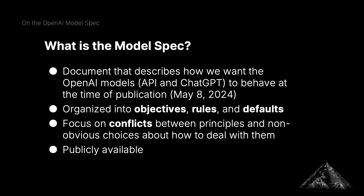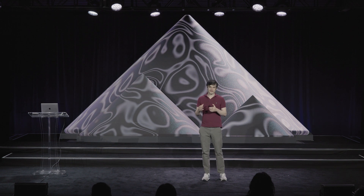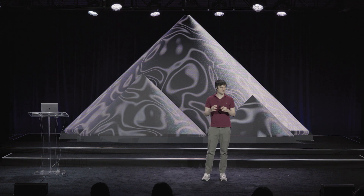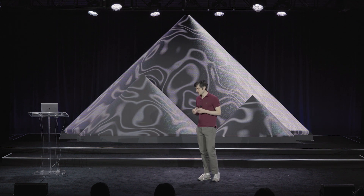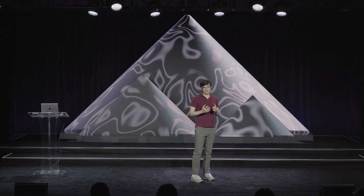There are tons of different principles the model has to follow, so we had to create some sensible organization for all of these things. We ended up organizing it into objectives, rules, and defaults, which I'll talk about later. In contrast to some earlier work in a similar spirit — like Anthropic's previous work on constitutional AI, which has a similar goal of writing down all the principles — we focused a lot on the conflicts between some of these principles and the non-obvious choices we were making on how to deal with those conflicts.